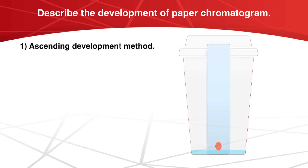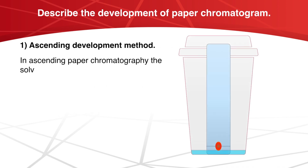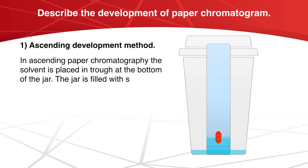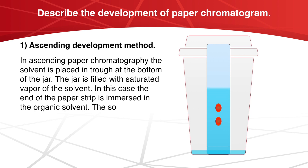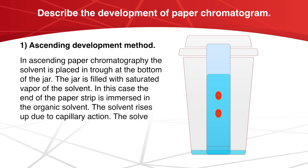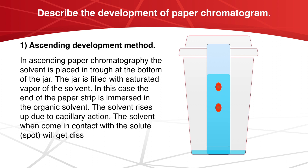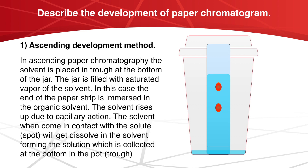In ascending paper chromatography, the solvent is placed in a drop at the bottom of the jar. The jar is filled with saturated vapor of the solvent. The end of the paper stripe is immersed in the organic solvent. The solvent rises up due to capillary action. When the solvent comes in contact with the solute or the spot, it gets dissolved in the solvent, forming a solution which is collected at the bottom of the pot.